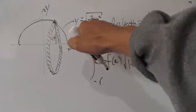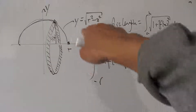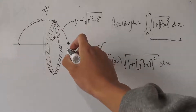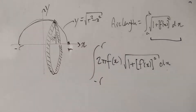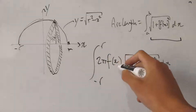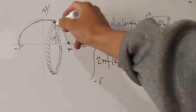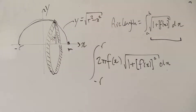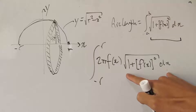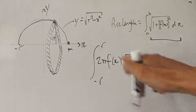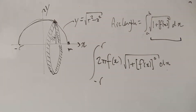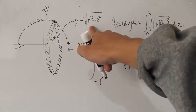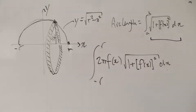We want to integrate all these little slivers from negative r to r. Our function is y equals the square root of r squared minus x squared — that's the semicircle with radius r. So to recap: 2π times f of x gives the circumference at any point x, and multiplying by the square root of 1 plus f prime of x squared dx gives the small width. Now we can substitute in our function to find the surface area.